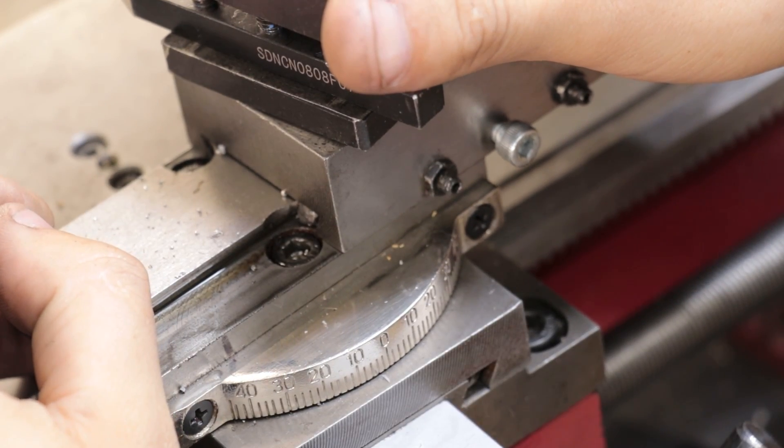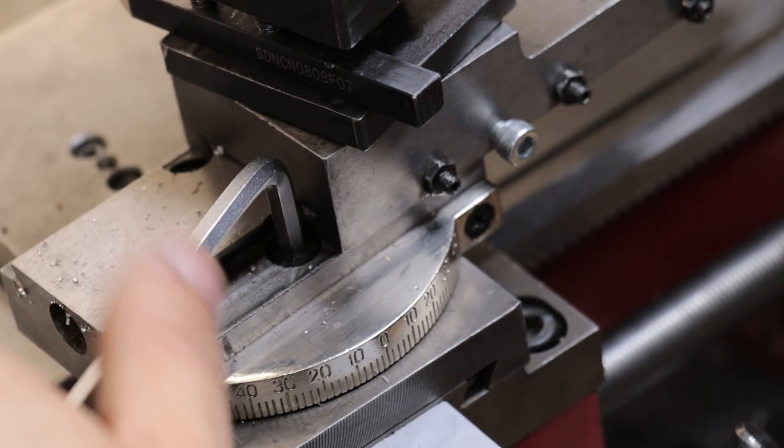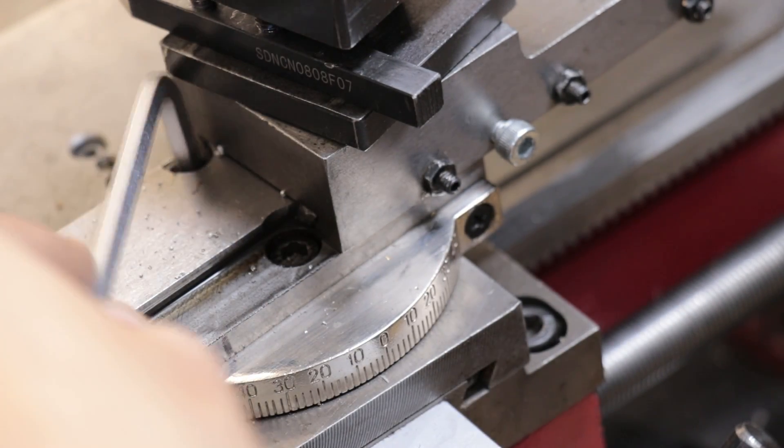The first thing I'll do is turn down the taper for the blade. I'll set the taper on the compound to cut roughly four degrees.